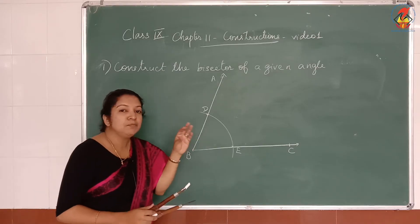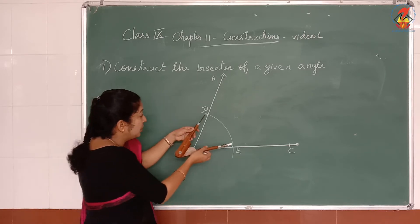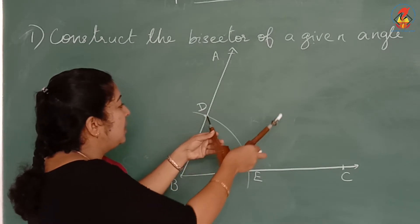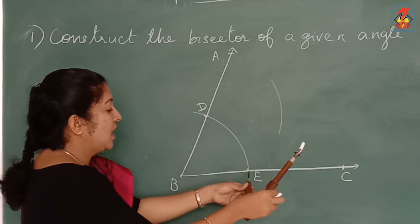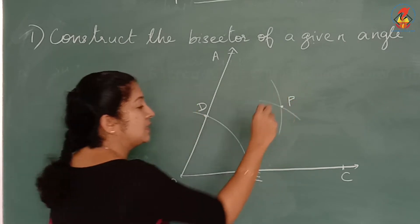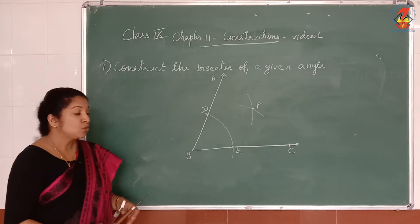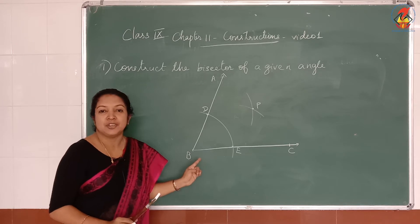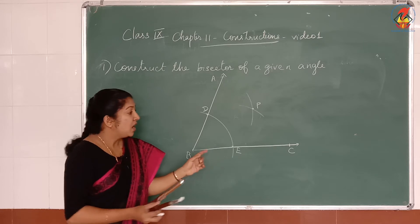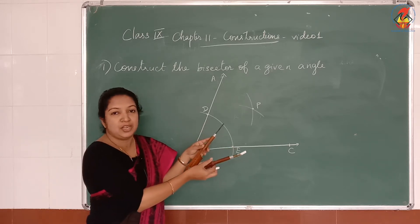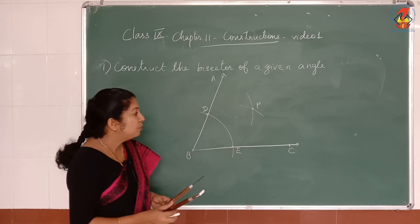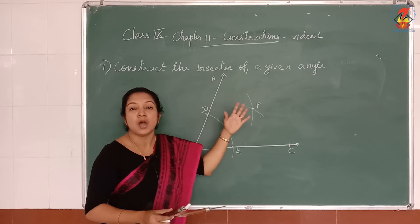Then, we need the bisector of this angle. So take more than half of DE and draw an arc from D and from E. Mark the point of intersection of these two arcs as P. So what we have done first: we have taken B as a centre and any radius, draw an arc marking D and E. After this, take more than half of DE and draw an arc from D and from E. Take the point of intersection of these two arcs as P.